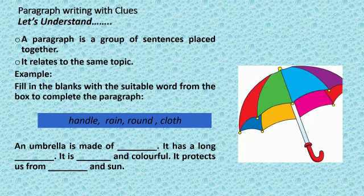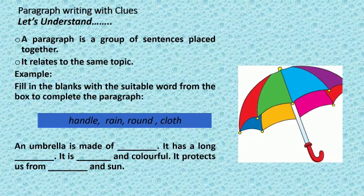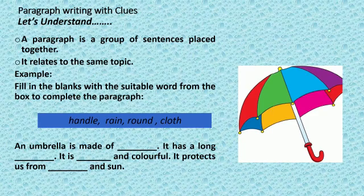The paragraph is: An umbrella is made of dash. It has a long dash. It is dash and colorful. It protects us from dash and sun. Children, you have to complete this paragraph with the help of the words given in the box. Start thinking.